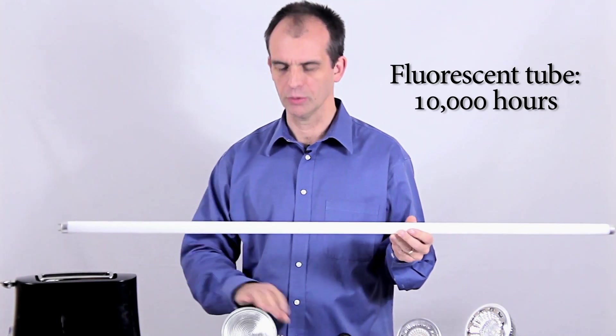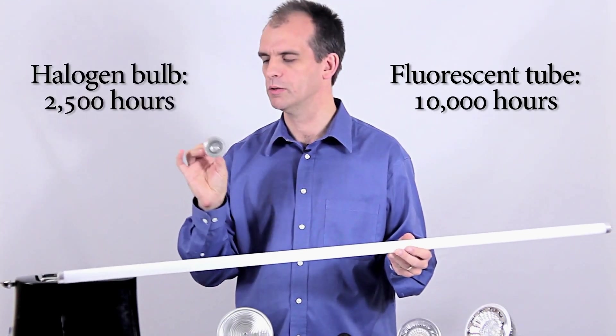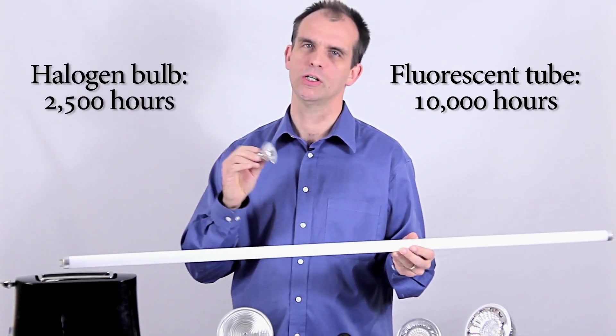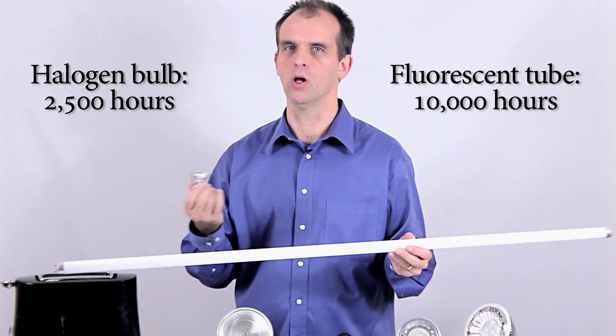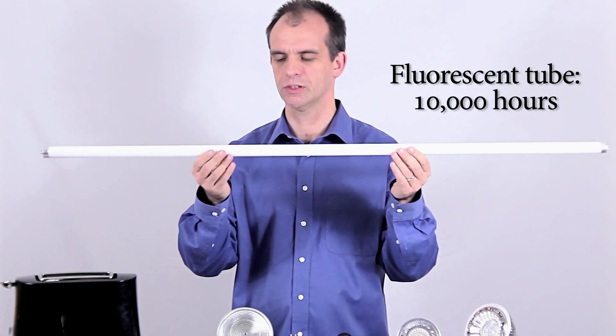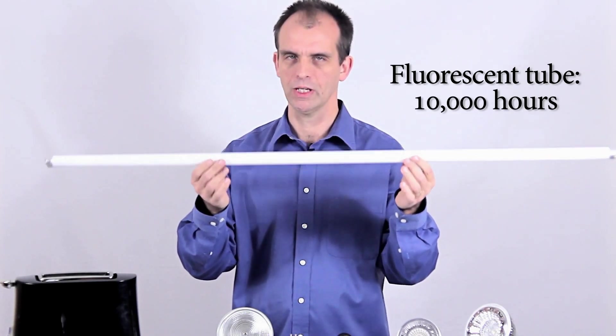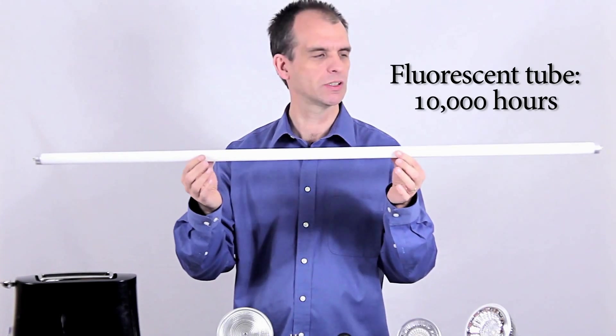Halogen bulbs are a little bit better. These will generally run 2,500 hours thereabouts. But again, you're looking at changing them 2 or 3 times a year if they're on all the time. So 10,000 hours is a big, big improvement over that. And it is fairly energy efficient. So this is a great technology.